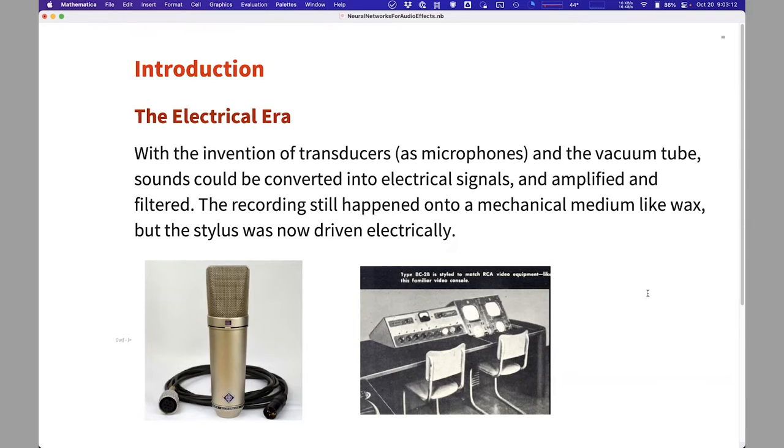This is processed by means of electrical circuits initially based on vacuum tubes and then transistors. After this step happens, there is an additional transducer that takes an electrical signal and still writes it onto some mechanical medium like a wax master. This can be pressed onto vinyl and reproduced.